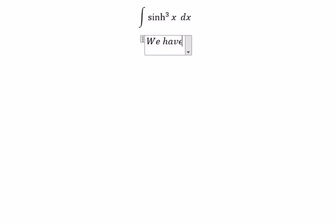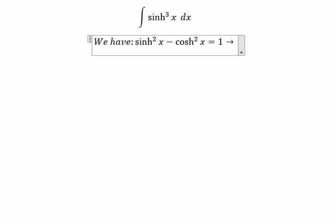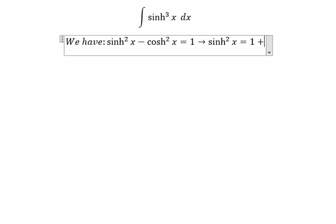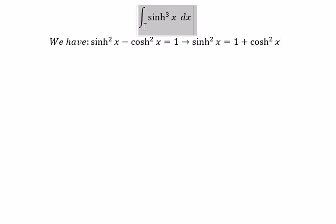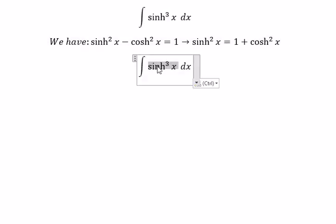We have sinh²x minus cosh²x equals 1, so we get sinh²x equals 1 plus cosh²x. So for this one, we can change to sinh x multiplied with 1 plus cosh²x.